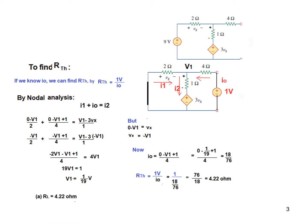For maximum power transfer, RL equals Rthevenin, so RL is also 4.22 ohms. Using the maximum power formula — Vthevenin squared divided by 4RL — with Vthevenin equals 7 volts and RL equals 4.22 ohms, the maximum power is 2.9 watts.